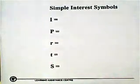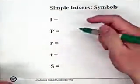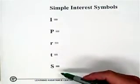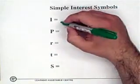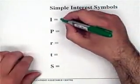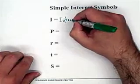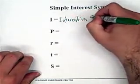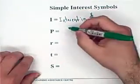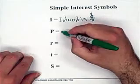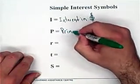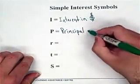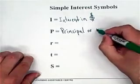For simple interest, these are the symbols you're going to be using: I, P, R, T, and S. I is our interest in dollars. P stands for principal, or how much it's worth today — so principal or today's dollars.